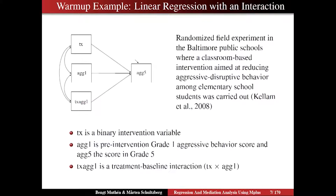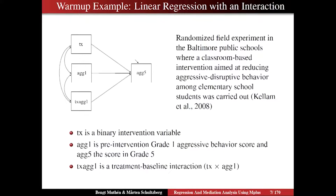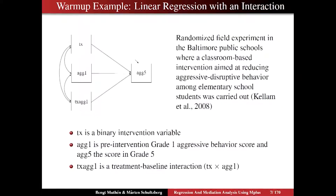We have the baseline aggression — the aggression in grade one, which we call AG1 for short — and the interaction between the treatment and the baseline aggression, TXAG1. The outcome variable is the aggression in grade five, or disruptive aggressive behavior. I'm going to call it aggression for short.